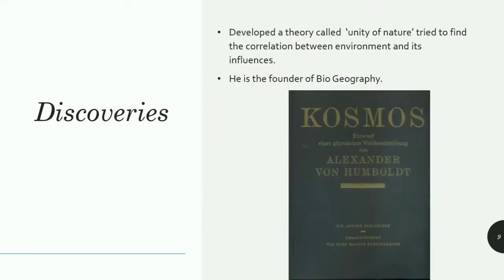In his book Cosmos, he propounded a theory of the unity of nature, which is basically the co-relationship between the environment and its influences. Ernest Haeckel was greatly influenced by Humboldt and later named this concept of unity of nature as ecology. Alexander von Humboldt was the pioneering person to recognize the co-relationship between environment and biodiversity, and that is why he is considered the founder of biogeography.